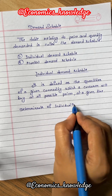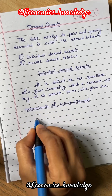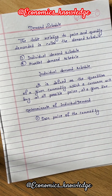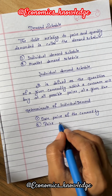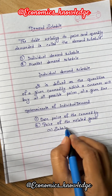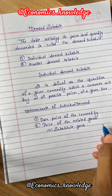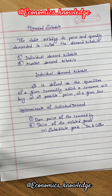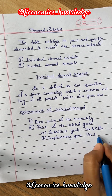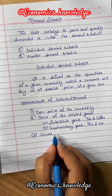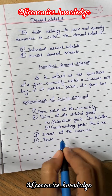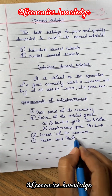Now let's see the determinants of individual demand. Number one, own price of the commodity. Number two, price of the related goods such as substitute goods like tea and coffee, and complementary goods like pen and ink. Number three, income of the consumer, and number four, taste and preferences of the consumer.